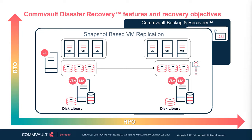Snapshot-based VM replication does not write data to backup media and therefore does not replace a regular backup. This replication mode also requires the source to be VMware, but shares other orchestration features with the backup-based VM replication mode, such as test boot, failover, and failback. The target RPO for snapshot-based VM replication is between 15 minutes and 4 hours, although this will vary depending on the environment.